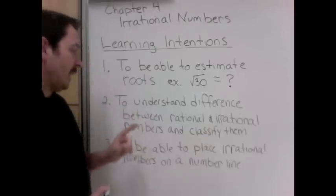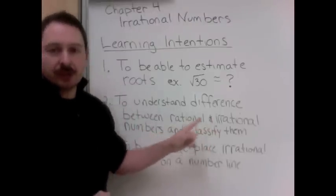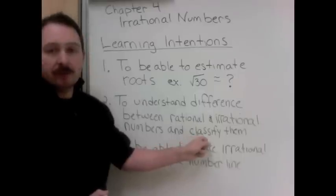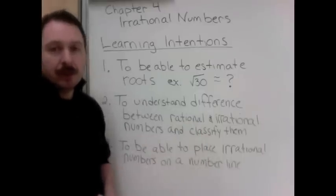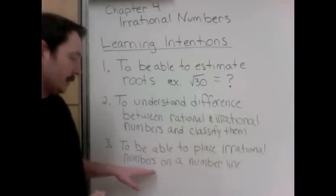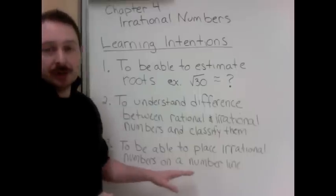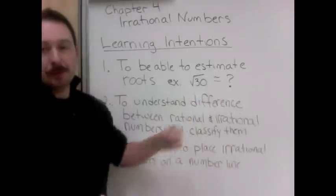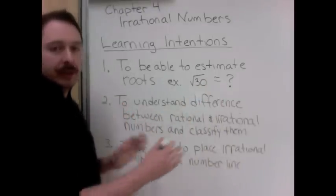Our learning intentions today, or what you should be able to understand by the end: you'll be able to estimate square roots, so the square root of 30 is approximately what number? Next, to understand the difference between rational and irrational. Also to be able to classify all of the rational numbers. And lastly, you'll be able to place irrational numbers on a number line, taking square roots and ordering them left to right on a number line.